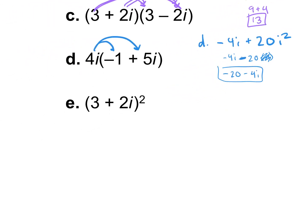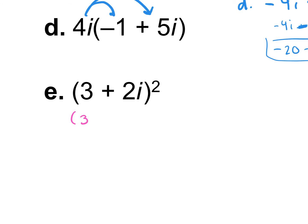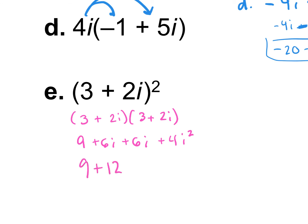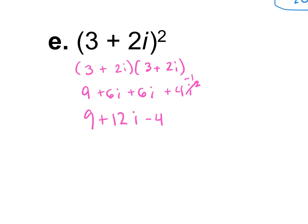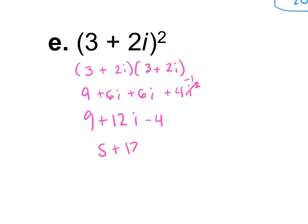For example E, this is like saying 3 plus 2i times 3 plus 2i, so we FOIL: first, outsides, insides, and last. Combining like terms: 9 plus 12i plus 4i squared. The i squared turns into negative 1, so minus 4. Then 9 minus 4 is 5, plus 12i. Answer is 5 plus 12i.